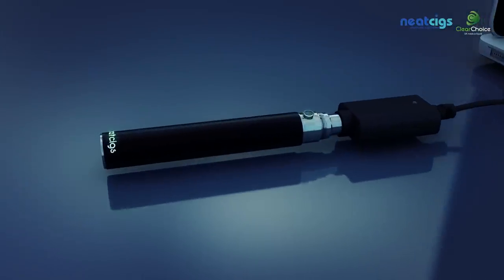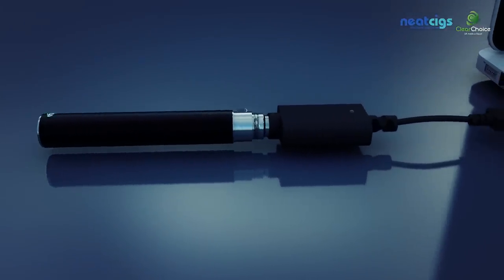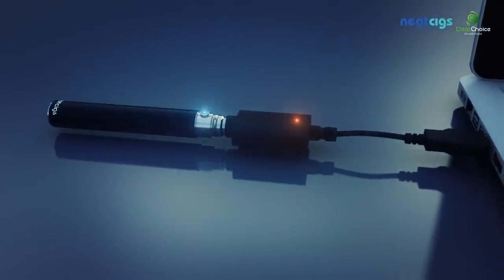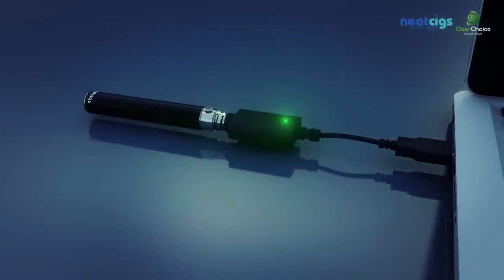To recharge your Revo, simply screw the battery into the charger supplied until the light turns red. This signifies that the battery is now on charge. Once the battery is fully charged, the light will turn green.